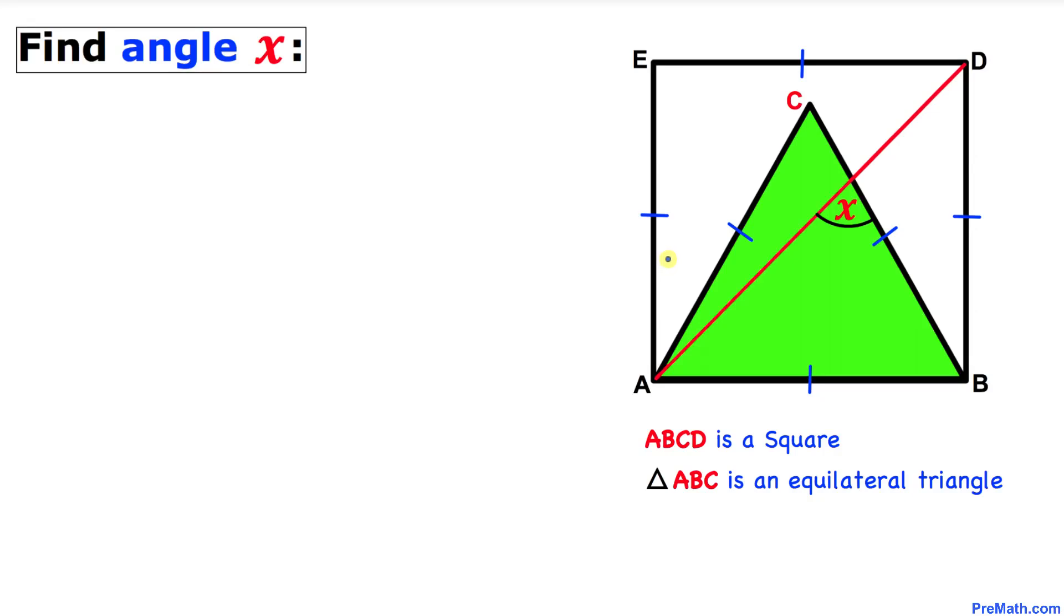Welcome to pre-math. In this video tutorial we have this equilateral triangle ABC inside the square, as you can see in this figure. Moreover, AD is the diagonal for this square and now we are going to find the angle X. So let's go ahead and get started with the solution and here's our very first step.